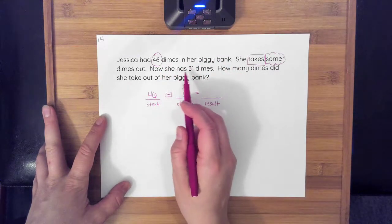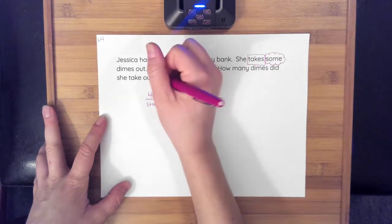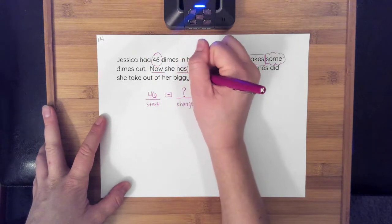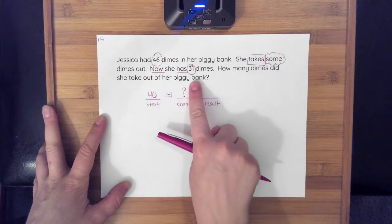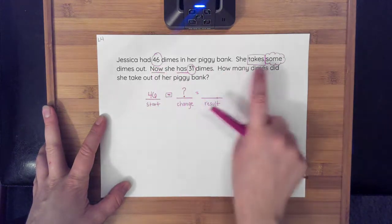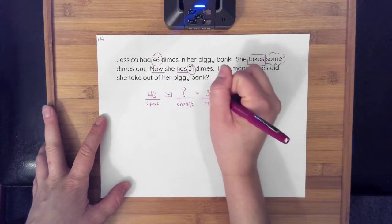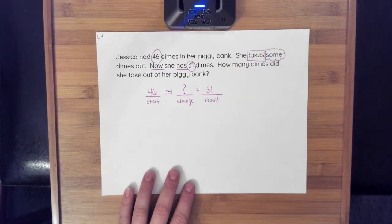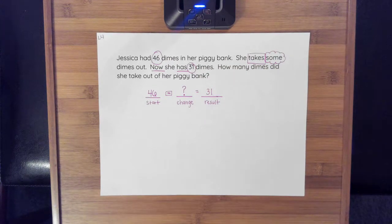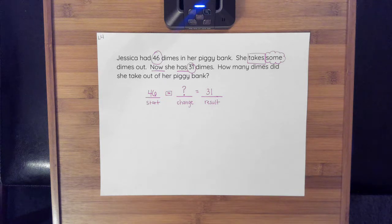Now she has 31 dimes. Well, I know now she has 31. So after she started with 46, she took some away, and now she has 31. That's my result—what she has left after she took some out of her piggy bank. So right now my equation is 46 minus something, question mark, the unknown, equals 31.